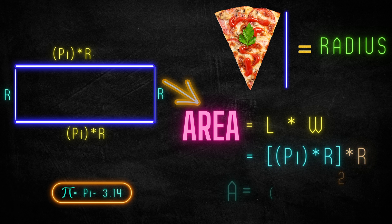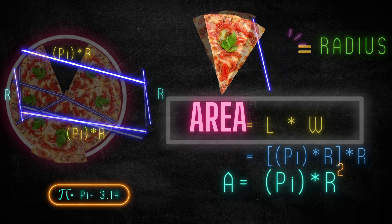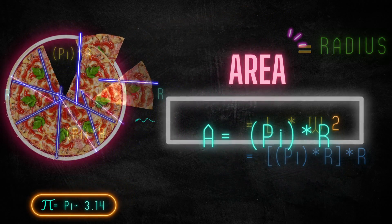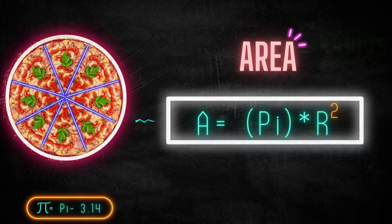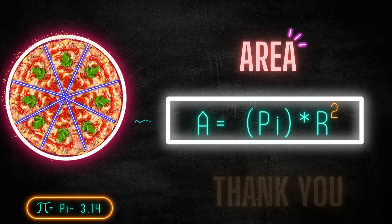The value of pi is approximately equal to 3.14. Based on our example, the area of the pizza is equal to πr², which means the area of a circle is πr². Thank you.